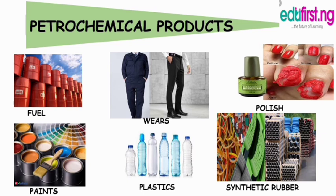Apart from fuel, which is the major product of crude oil, other petrochemical products include wax polish of different types, plastics of various forms, and synthetic rubber of various forms, as you can see from those pictures on screen.